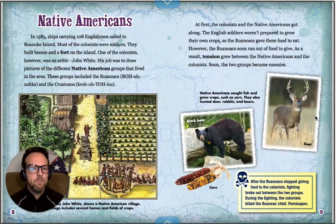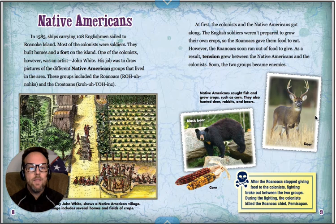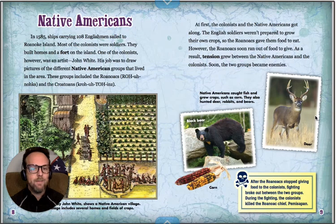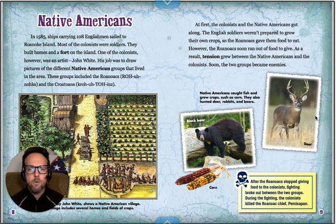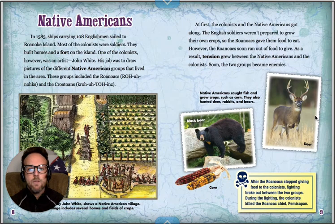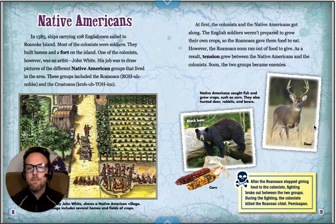In 1585, ships carrying 108 Englishmen sailed to Roanoke Island. Most of the colonists were soldiers. They built homes and a fort on the island. One of the colonists, however, was an artist — John White. His job was to draw pictures of the different Native American groups that lived in the area. These groups included the Roanokes and the Croatoans. At first, the colonists and the Native Americans got along. The English soldiers weren't prepared to grow their own crops, so the Roanokes gave them food to eat. However, the Roanokes soon ran out of food to give. As a result, tension grew between the Native Americans and the colonists, and soon the two groups became enemies.